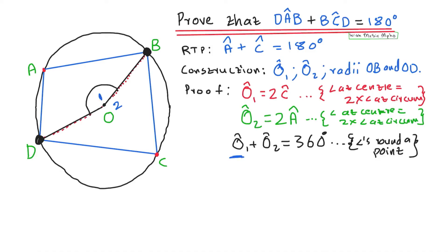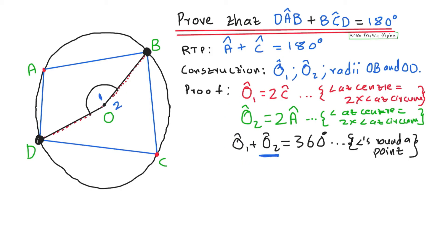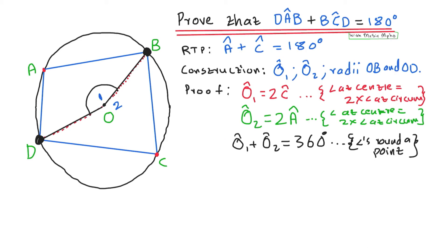Now substitute: where you see O1, replace it with 2C, and where you see O2, replace it with 2A. So you get 2C plus 2A equals 360 degrees. After applying both theorems — angle at center twice angle at circumference, and angles around a point — you simply substitute. It's theorem, theorem, substitution.